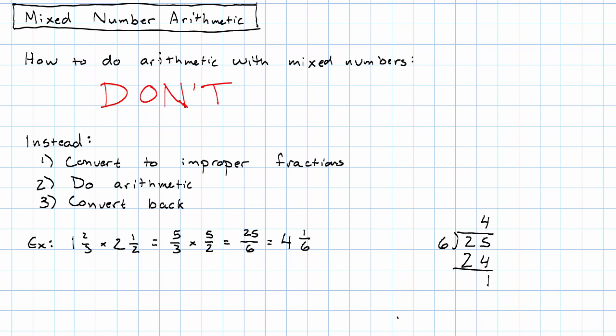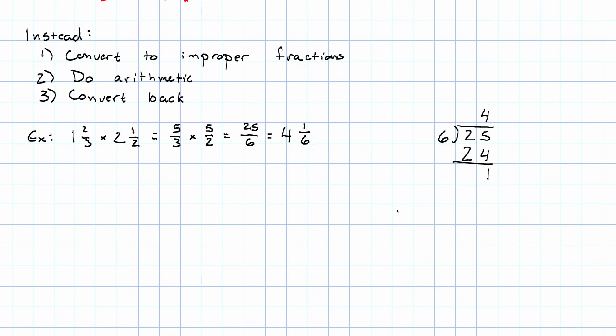We could also do our mixed number arithmetic on the calculator. We could say, making sure that our mixed number is in parentheses and thinking carefully about what the mixed number means. 1 and 2 thirds is 1 plus 2 thirds. 2 and a half is 2 plus 1 half.